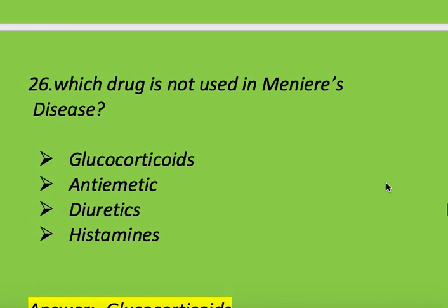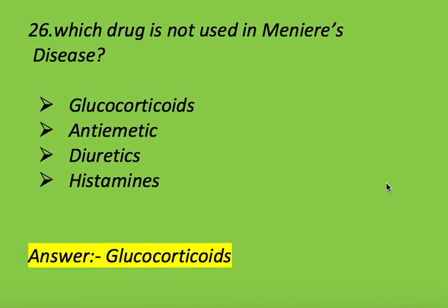Next question: which drug is NOT used in Meniere's disease? Options: glucocorticoids, anti-emetics, diuretics, and histamine. Right answer is glucocorticoids. Glucocorticoids is the drug not used in Meniere's disease.